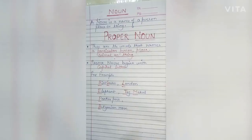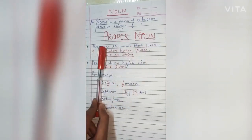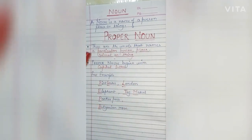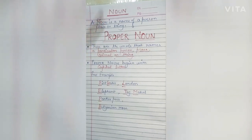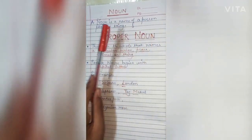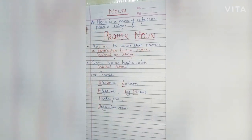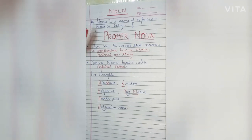Welcome back dear students. Today we will be discussing a very special type of noun — that is proper noun. Before proceeding, let us talk about noun. What is a noun? By definition, a noun is a name of a person, place, or thing. Likewise, Ram, Rampur, pencil, paper — these are all nouns.